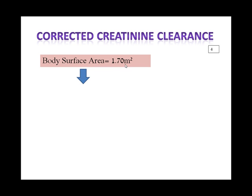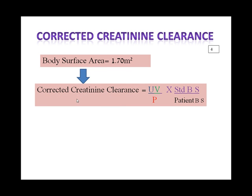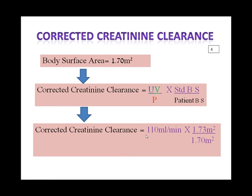Now we know the body surface area for the patient is 1.70 square meters. We can calculate the corrected creatinine clearance. We know the clearance, and we multiply by the standard body surface area of 1.73 square meters, then divide by the patient's body surface area of 1.70 square meters. The clearance is 110 ml per minute for a body surface area of 1.70 square meters. Finally, the corrected creatinine clearance is 112 ml per minute.